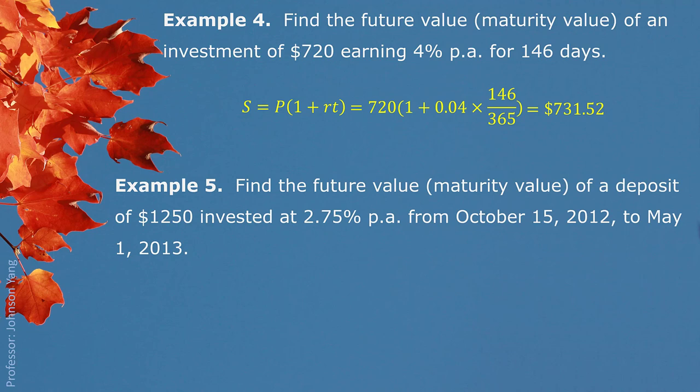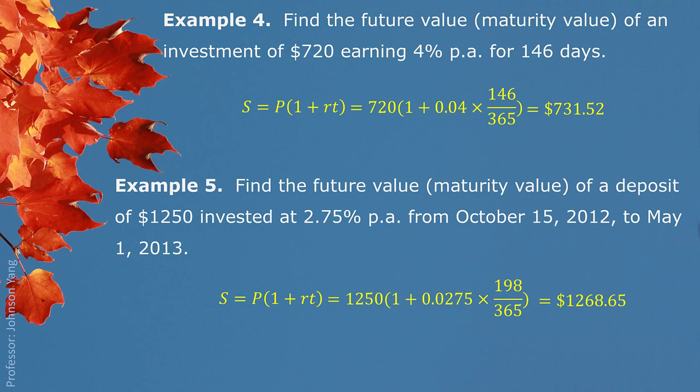Example 5: find the future value of a deposit of $1,250 invested at 2.75% from October 15, 2012 to May 1, 2013. We have principal and annual interest rate, but we need to figure out how many days are in between the two dates — that is a little extra step. We find 198 days in between. We switch 198 days to years by dividing by 365, finish the calculation, and get a maturity value of $1,268.65.